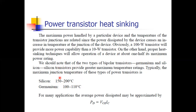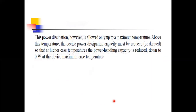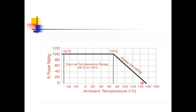Average power depends on voltage times current — Vc × Ic. Power dissipation is allowed only up to the maximum temperature. Above this temperature, handling capacity starts to reduce — this is called derating. On the derating curve of power versus ambient temperature, up to 80°C the capacity is constant, but after that the power handling capacity reduces and eventually becomes zero.